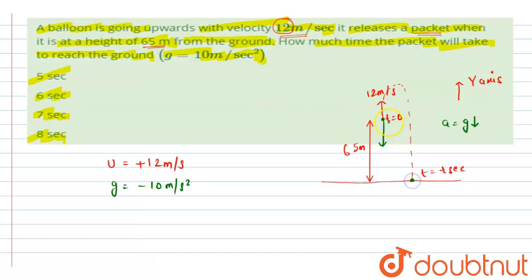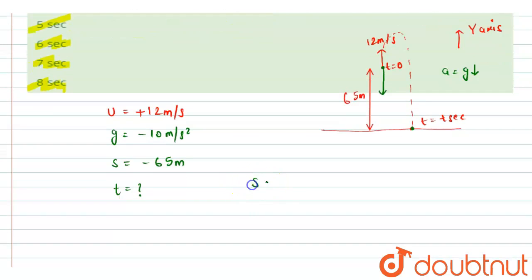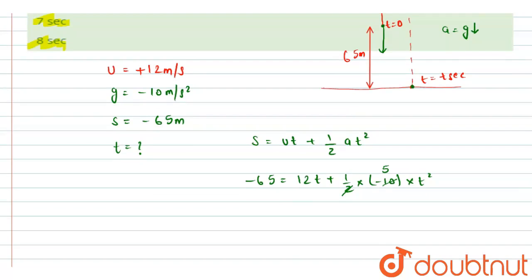And we will use here the Newton's second equation of motion, that is s equals to ut plus half at square. So putting the values, we will get minus 65 equals to 12t plus half into acceleration is minus 10 into t square. Here acceleration is due to gravity. So from here we can cancel this out by 5, and we will get minus 65 equals to 12t minus 5t square.